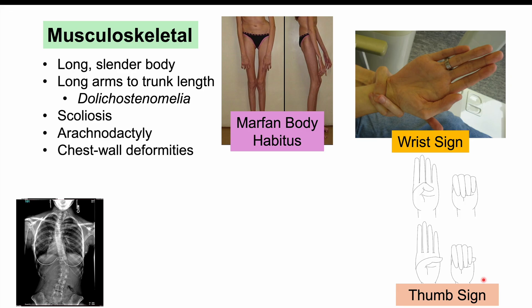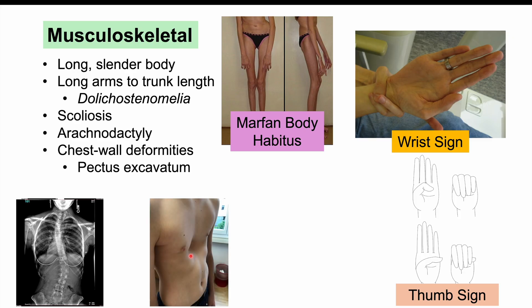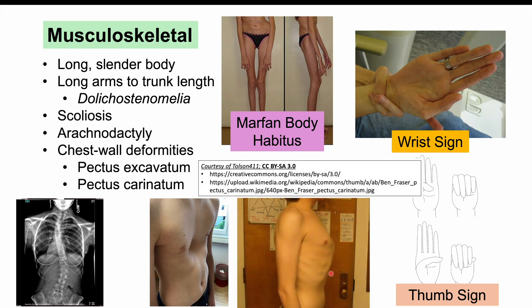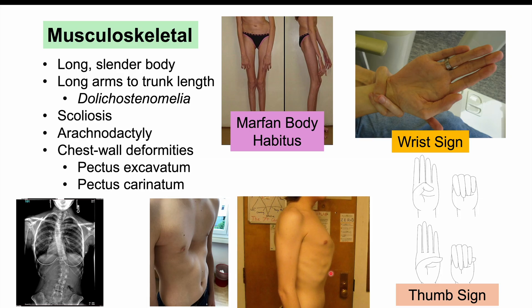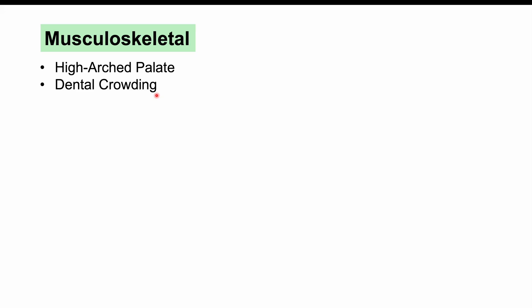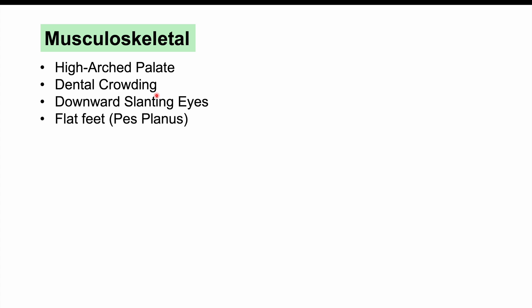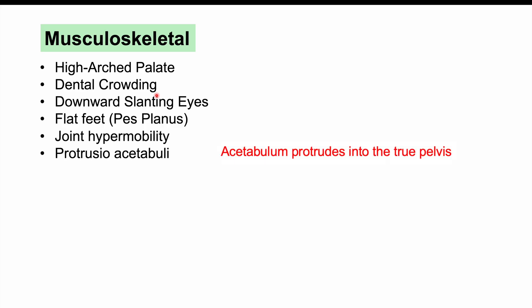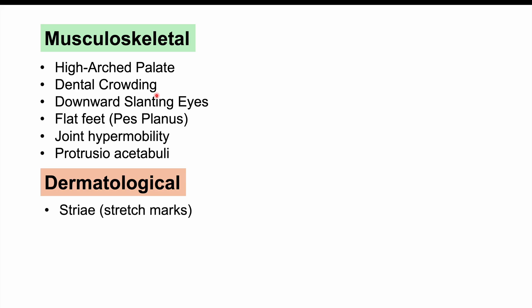We can also see important chest wall deformities, including pectus excavatum — an inward depression of the chest — and pectus carinatum, where the chest points outward, often referred to as a pigeon chest. Other musculoskeletal findings include high arched palate, dental crowding, downward slanting eyes, flat feet or pes planus, joint hypermobility, protrusio acetabuli, and dermatological findings such as striae or stretch marks.